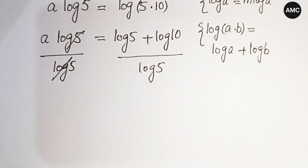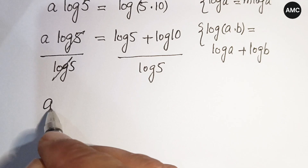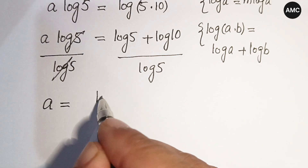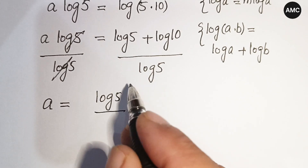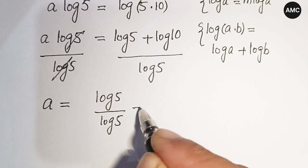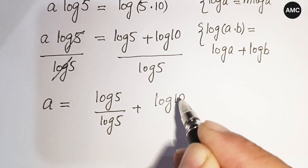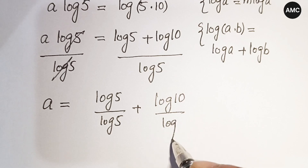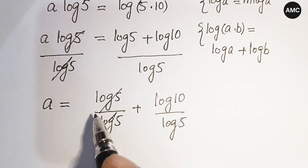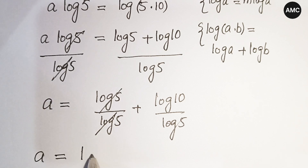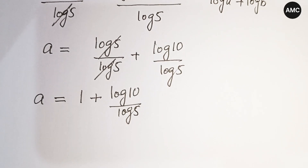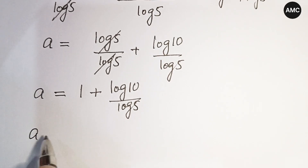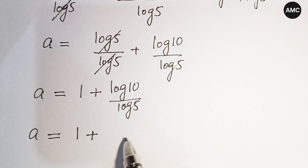Now dividing both sides by log 5, the log 5 on the left cancels. Writing log 5 separately under each term on the right, we get a is equal to log 5 over log 5 plus log 10 over log 5, which gives a is equal to 1 plus log 10 over log 5.